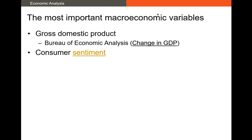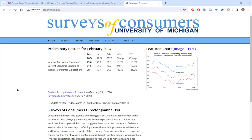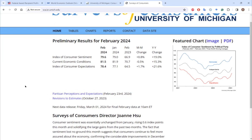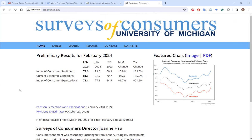Next we have consumer sentiment — something you may not have covered in other classes, but it's vitally important when determining how a country's economic conditions are going to change. If consumers are very bullish on the state of the economy — believing future market conditions will be better than current — they're more likely to spend, buy bigger cars, a new house, and engage in spending that drives future GDP growth. One of the best metrics for consumer sentiment in the U.S. is the index put out by the University of Michigan.